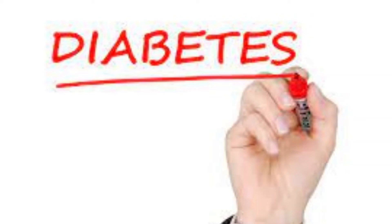Diabetes mellitus refers to a group of diseases that affect how the body uses blood sugar glucose. Glucose is an important source of energy for the cells that make up the muscles and tissues. It's also the brain's main source of fuel.